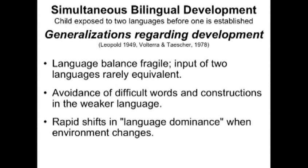We'll go over some very brief stuff about normal, typical second language acquisition. There are two major types: simultaneous bilingual development and sequential bilingual development.